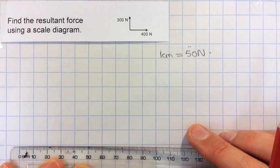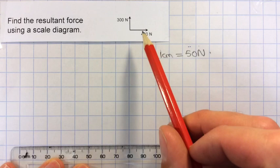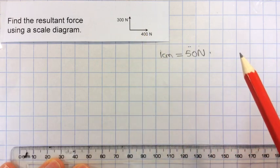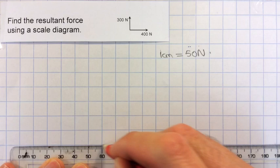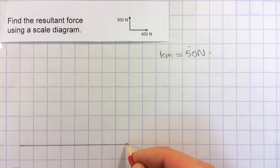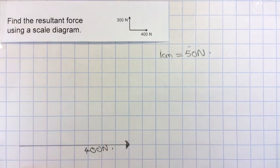For this one, I draw in my first one, which is the 400 newton one. And because 1 centimetre is 50 newtons, that means this will need to be 8 centimetres long. So I'll draw that with the arrowhead, and just to remind me, I'll write 400 newtons next to it.